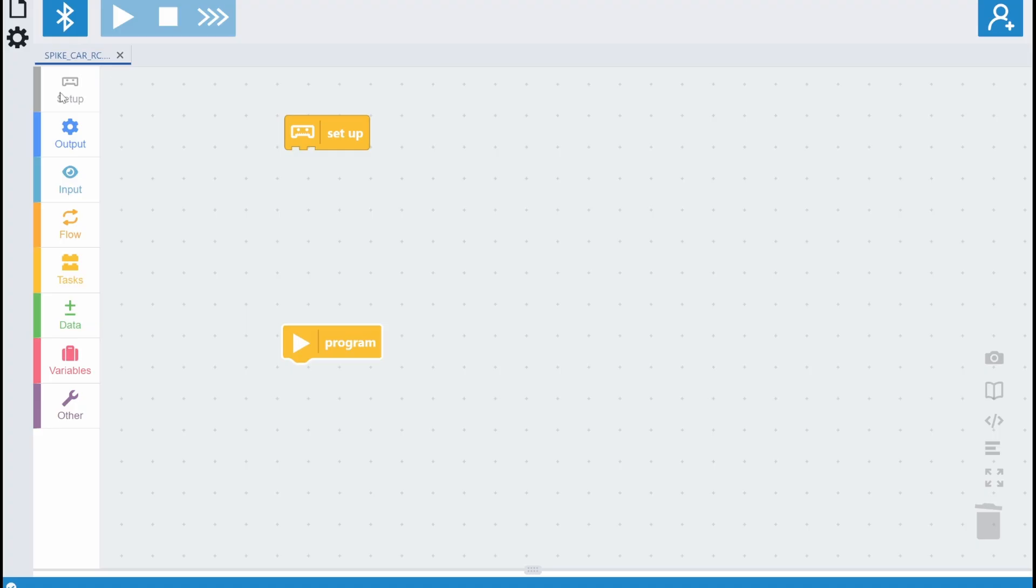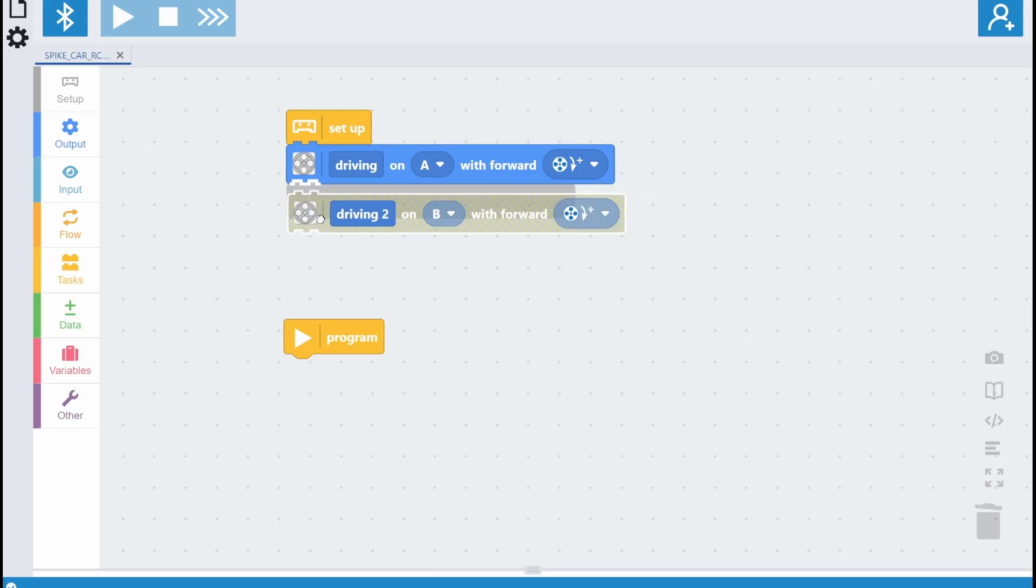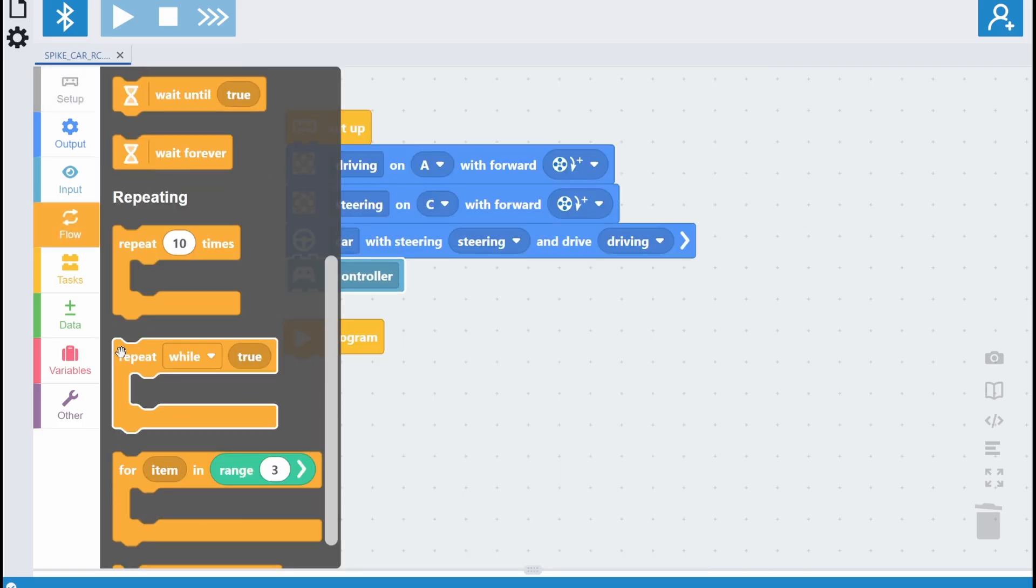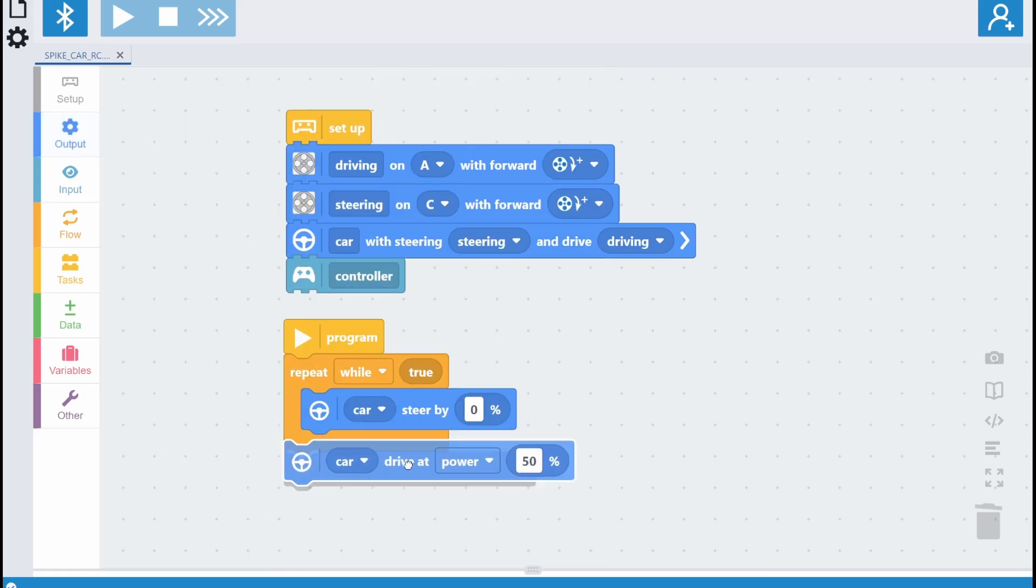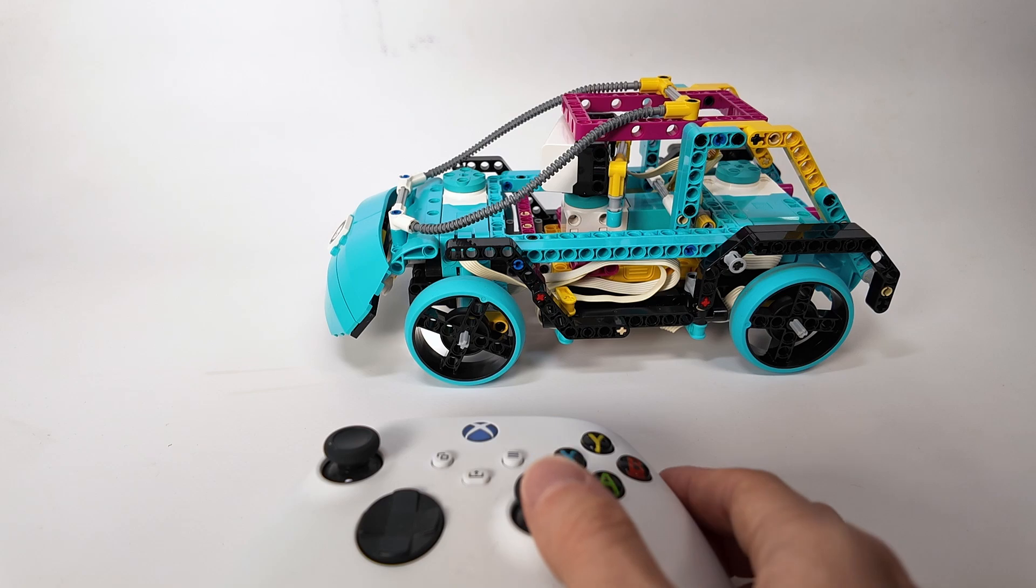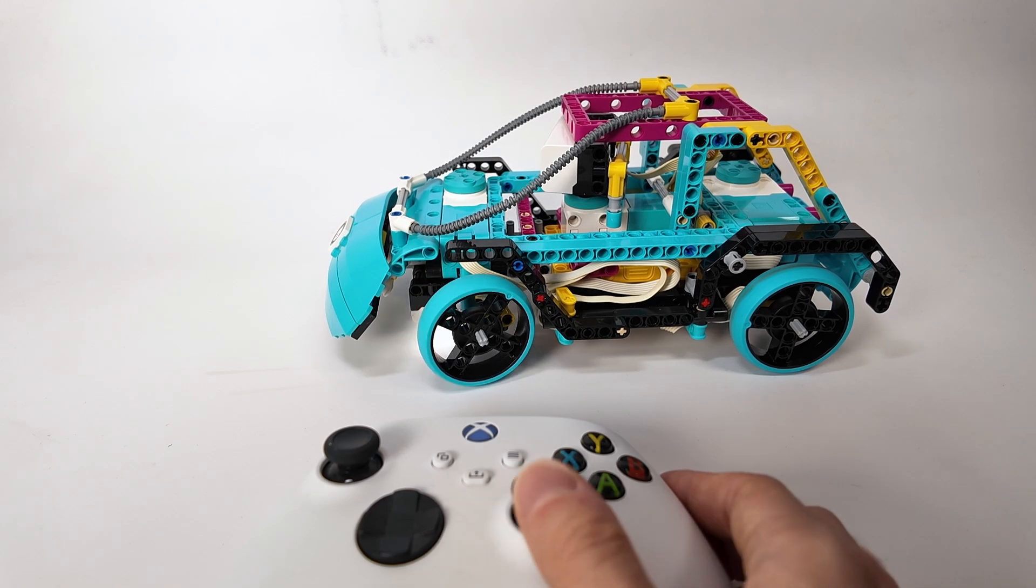But wait, there's even more. I promised you a bonus trick, remember? So, do you want full control? You could replace the standard firmware with the excellent Pybricks alternative one and control your car with this LEGO train remote or even with an Xbox controller.